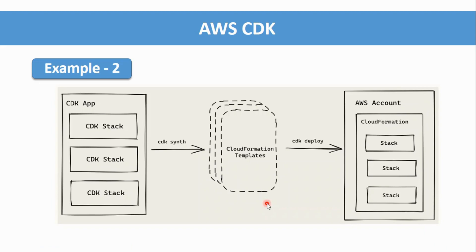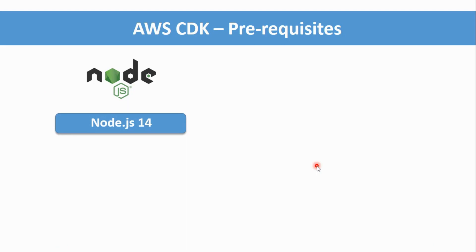To summarize the full workflow: inside a CDK project you have an application, which contains stacks, and inside stacks you define multiple AWS services. You run CDK synth to generate the CloudFormation template — similar to Terraform plan — then run CDK deploy to deploy the resources into your AWS account using CloudFormation.